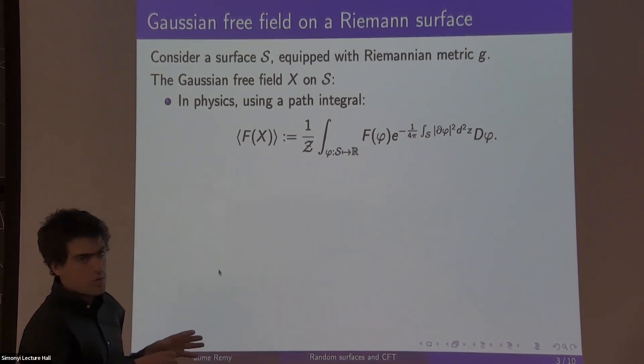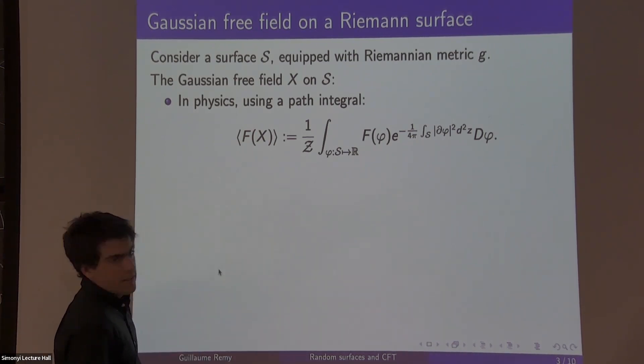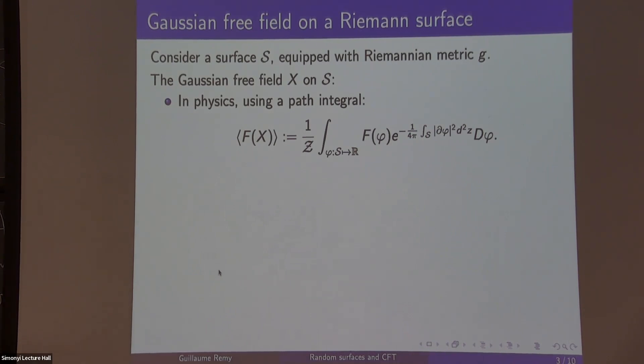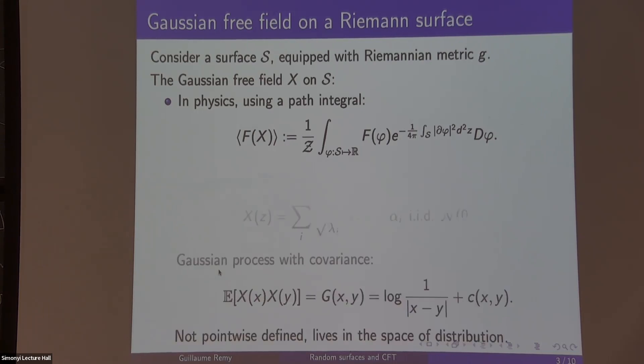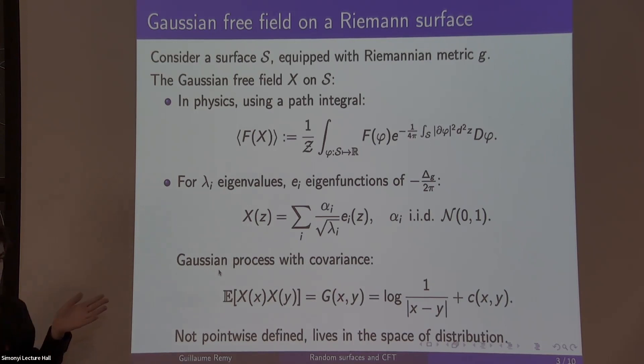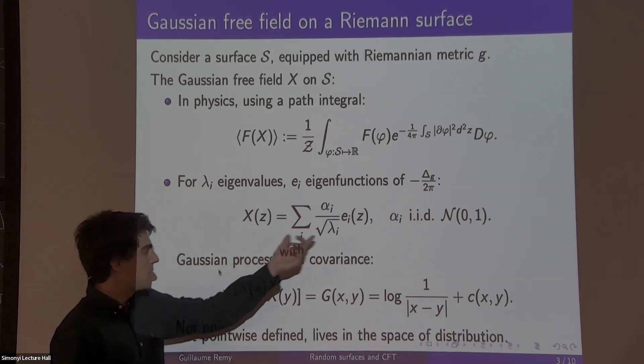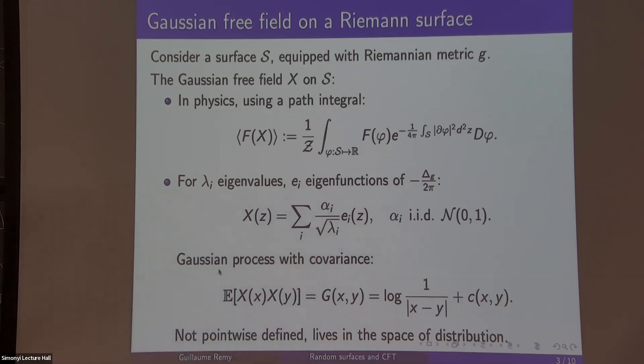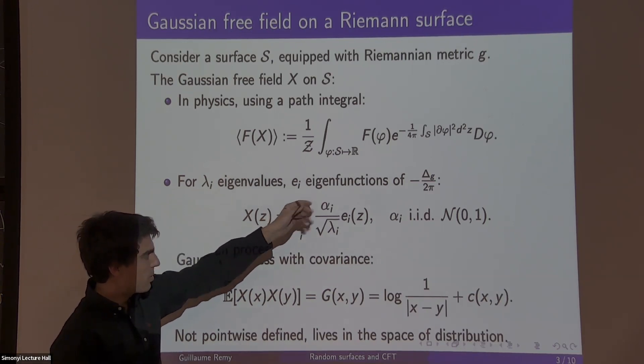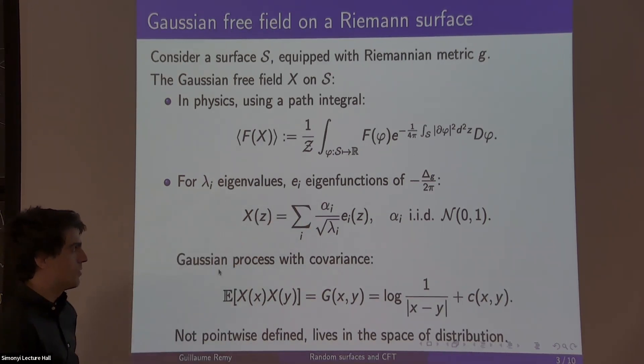You say that an expectation of any functional of the free field is computed by integrating over all maps from your surface to R. You have a formal uniform measure, along with some e to minus an energy functional, where for the free field, the energy functional is the kinetic energy, just integrate the gradient square.